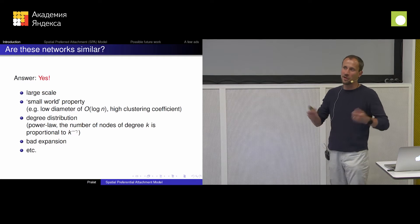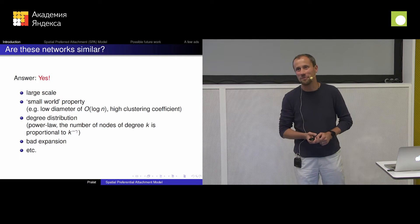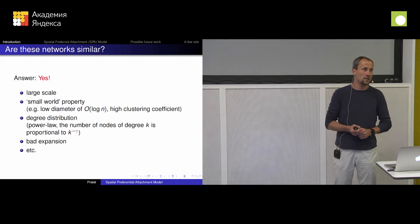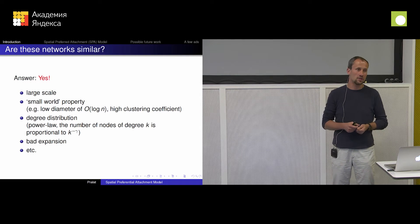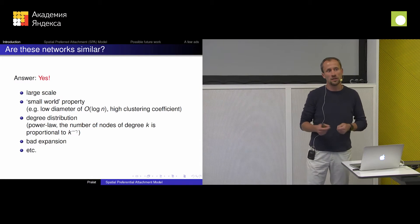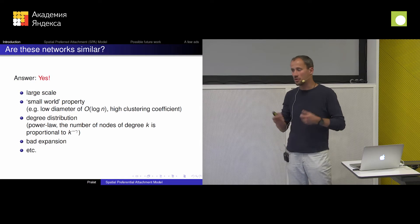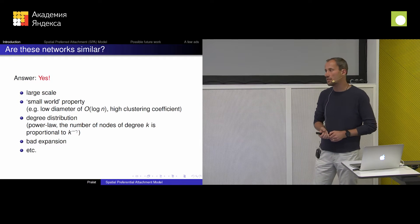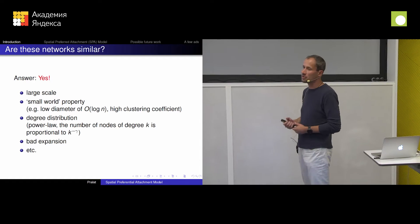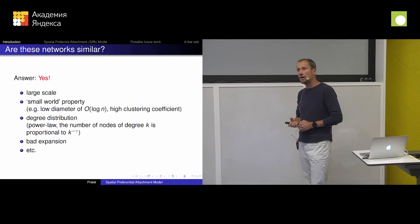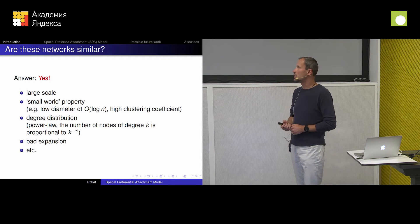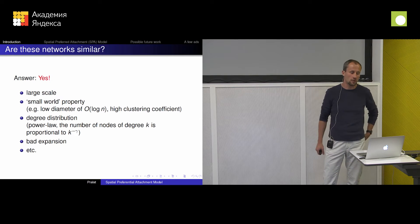For example, they are large — the number of nodes is huge. Also, we have the so-called small world property. What does it mean? It means that it's a huge network, but on the other hand, surprisingly, people or users or nodes or whatever they represent are very close to each other in some sense. Some people say the diameter is log n, or maybe they say the average distance is log n over log log n, where n is the number of nodes.